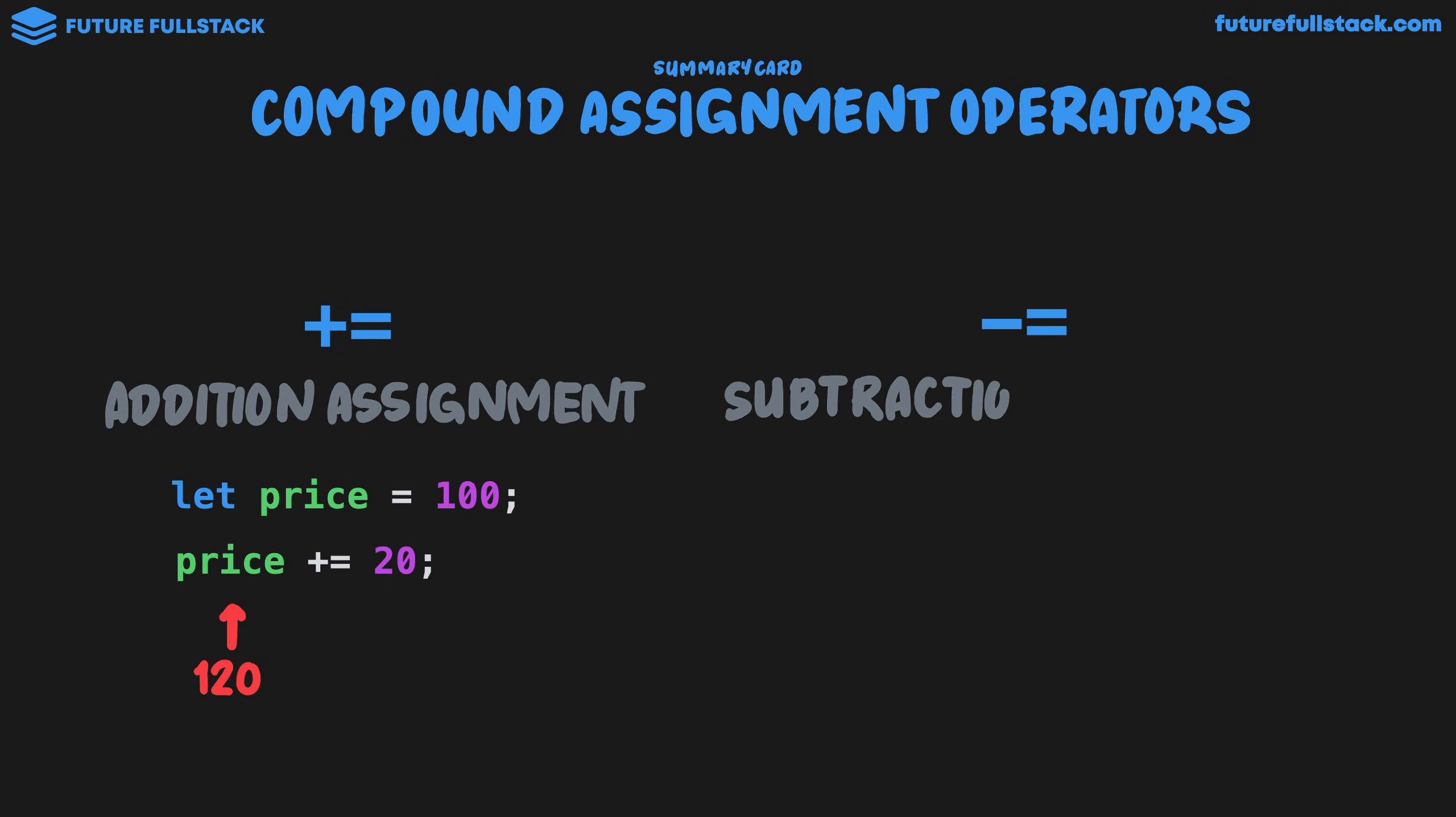We then looked at subtraction assignment, where for example, we have let weight equal 90. And using subtraction assignment, we can do weight minus equals 10, which would change the value of weight to 80. Now these were the most common types of compound assignment, but we also looked at multiplication, division, modulus and exponential assignment.